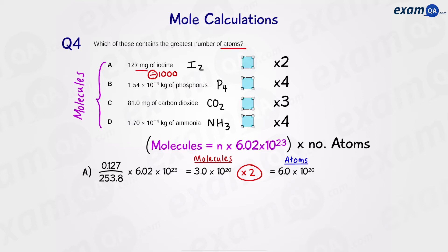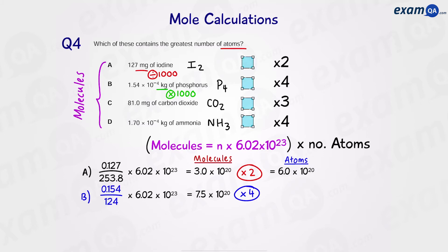For B, times by 1000 first to convert kilograms into grams. Once we have the mass, divide by the Mr of P4, which is 124. This fraction gives us moles, then times by Avogadro's constant to give us the number of P4 molecules. Then times by 4 to give us how many individual phosphorus atoms we have.